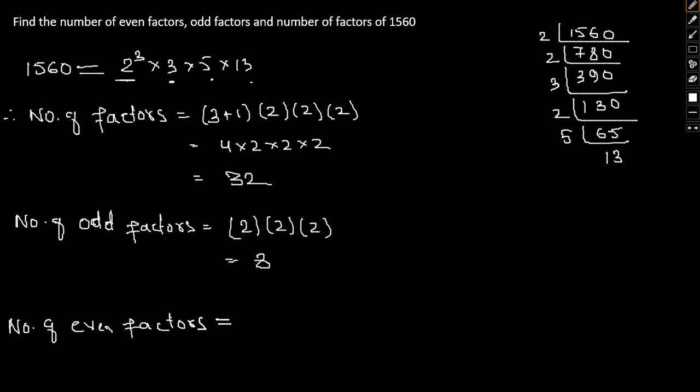Number of even factors will be nothing but 32, that is total number of factors minus odd factors, that is 24.